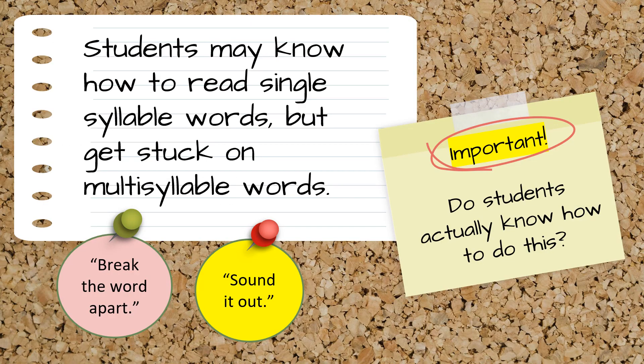Students may know how to read single syllable words but may struggle with multisyllabic words. How many times have we as teachers told our students to break the word apart or sound it out? Have we thought to wonder if our students actually know how to do this? Through explicit instruction, we can teach our students specific strategies for decoding unknown words based on syllable types. Not every unknown word students encounter will follow these strategies 100% of the time, but they do work often enough that students will benefit from knowing how to identify different syllable types.